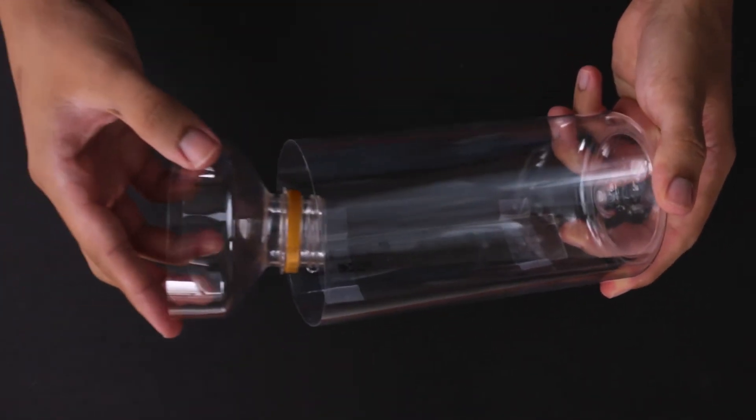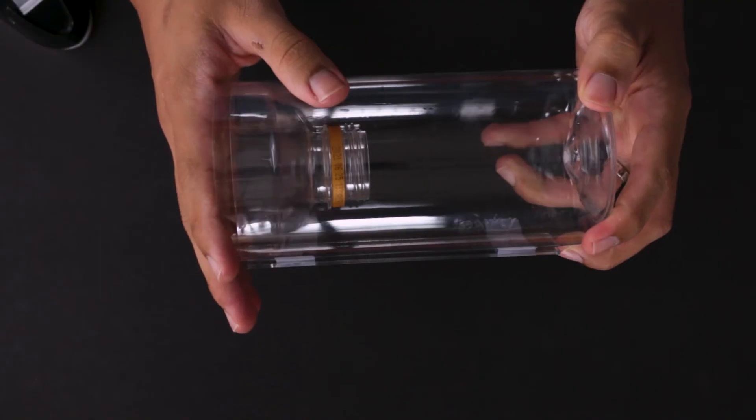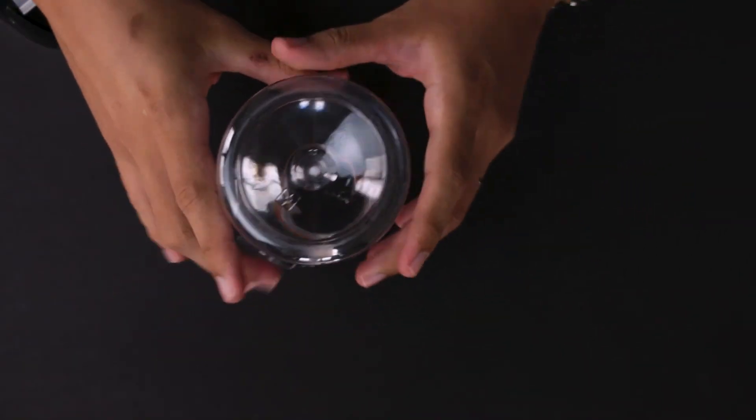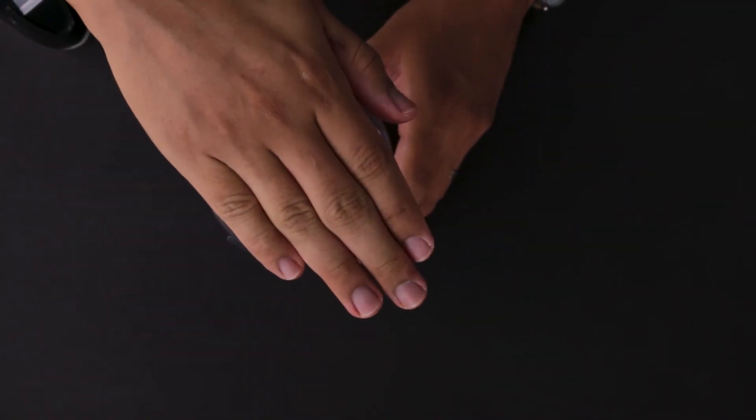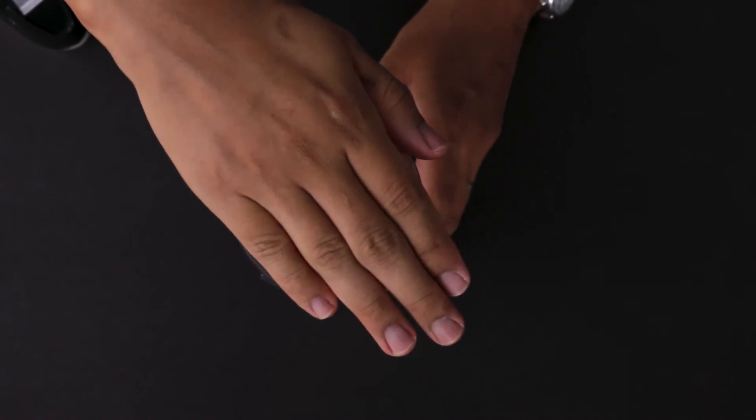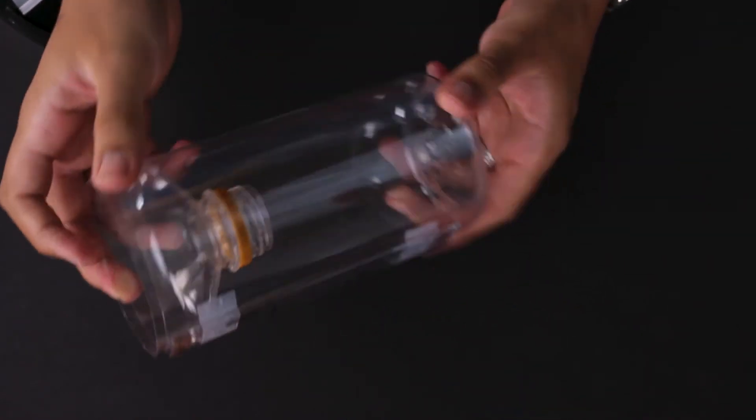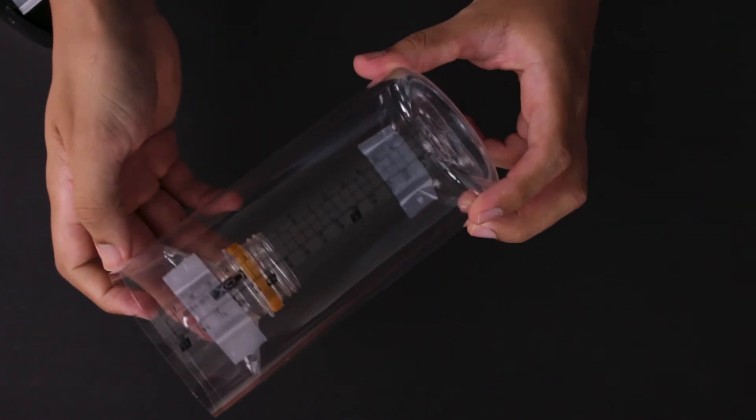Finally, take the top of the bottle, flip it around, and insert it into the opening of the bottle. Friction will be enough to keep it together. And there you have it.